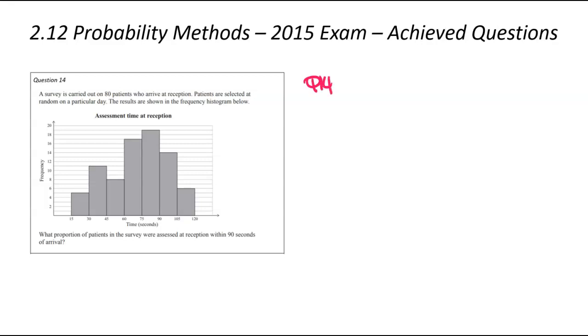Now looking at question number 14, a survey is carried out of 80 patients who arrive at reception, selected on a random particular day, and here's a histogram of those results. What portion of patients were assessed within 90 seconds again?